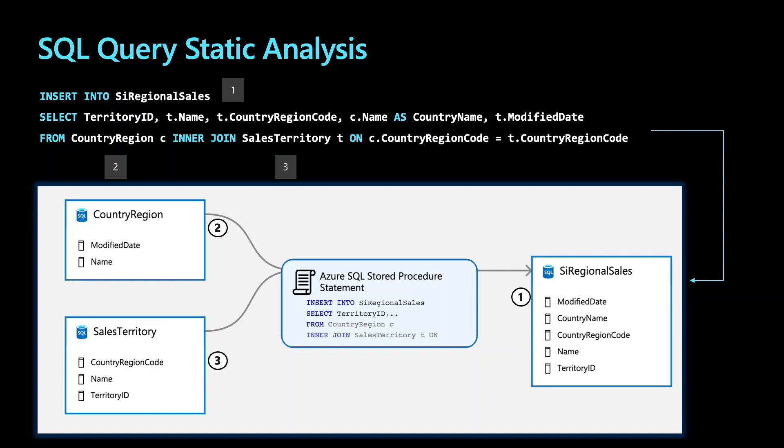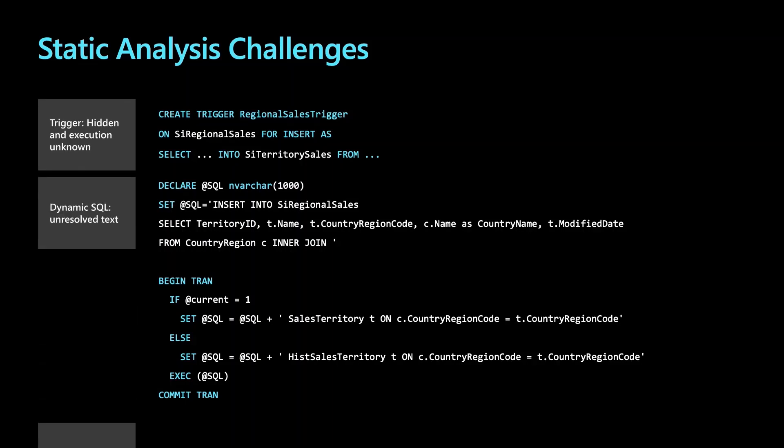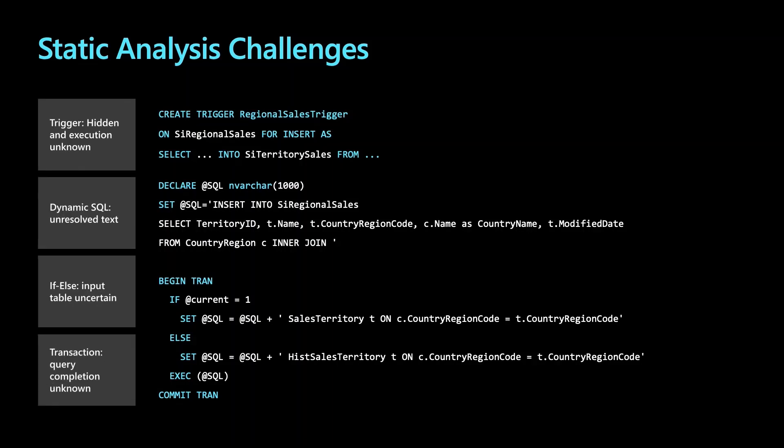Let's take an example. If you consider this SQL query, there is a stored procedure executing the query you see here, and it produces an output table based on joining two input tables. Figuring out where each column of the output came from — which column of which input tables it came from — is straightforward. You can do this by static analysis of the SQL program.